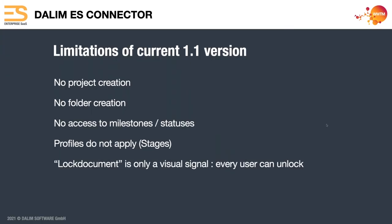Some limitations in the current version: you can't create projects or folders, so you're limited to what exists in ES already. You're basically using the CMIS API, so it doesn't understand milestones, stages, or anything like that. If you have workflows with stages and customers locked out from seeing things, pay attention to what permissions you give them. Also, the lock document is really just a visual signal — any user can unlock it, so you need to expect your users to honor it.